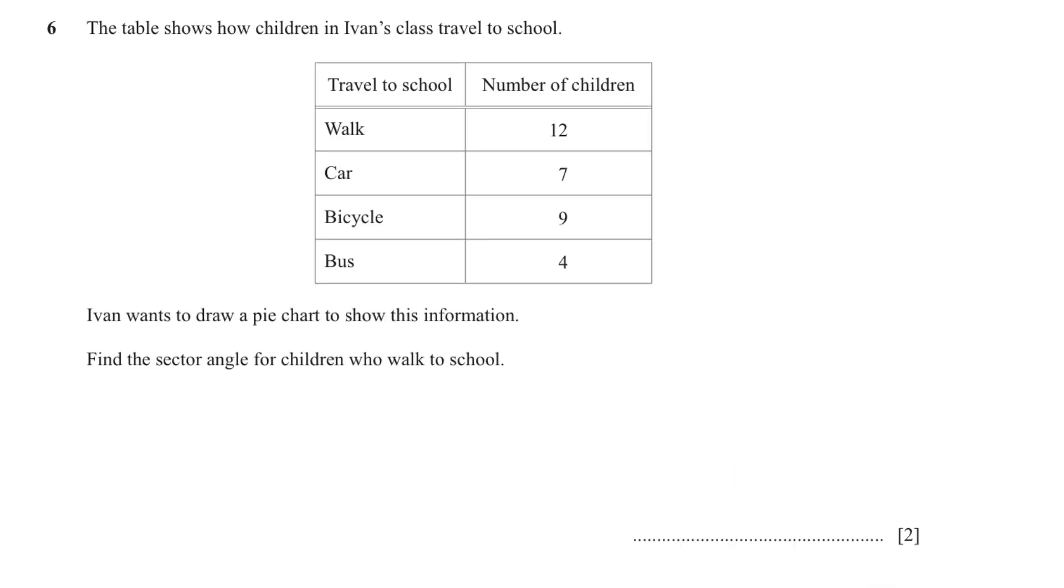Question number six. The table shows how children in Avan's class travel to school. We have been given the mode of travel and the number of children. Avan wants to draw a pie chart to show this information. Find the sector angle for children who walk to school.